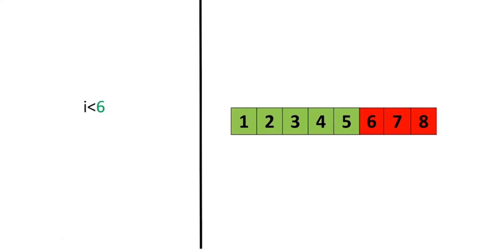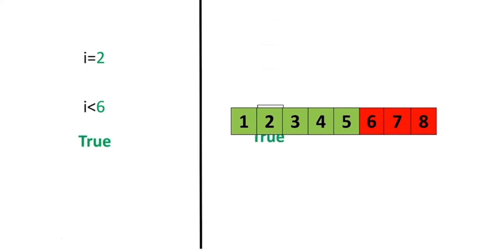We can change the inequality. If the value of the left operand, in this case i, is less than the value of the right operand, in this case 6, then the condition becomes true. Again, we can represent this with a colored number line. The areas where the inequality is true are marked in green, and red where the inequality is false. If the value for i is set to 2, the result is a true, as 2 is less than 6.